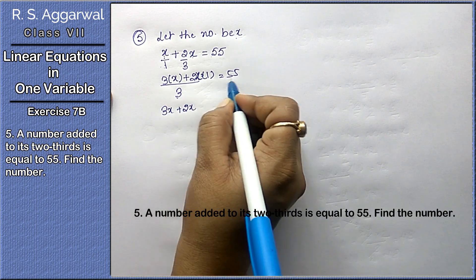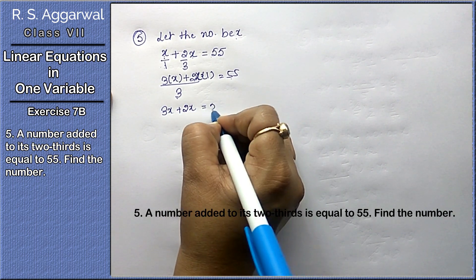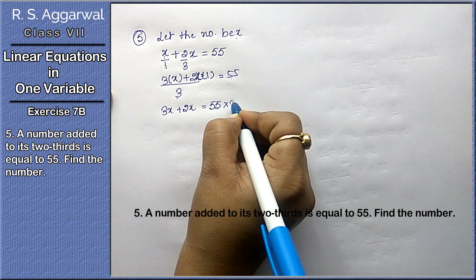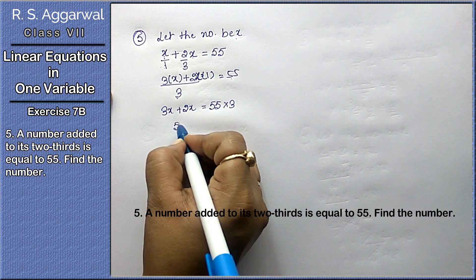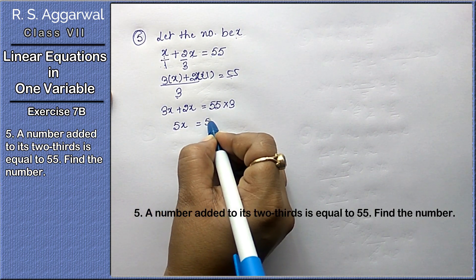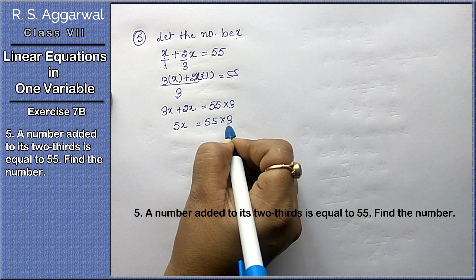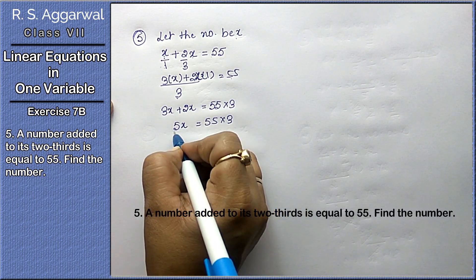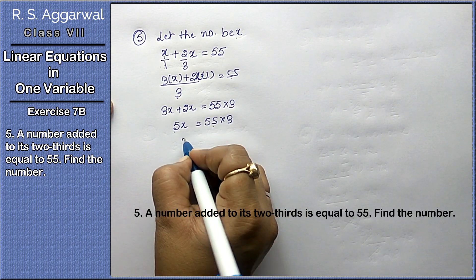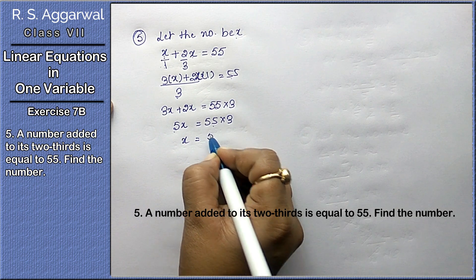Equal to 55. We get 3x plus 2x upon 3 equals 55. This 3 was in division, it becomes multiplication, 55 into 3.